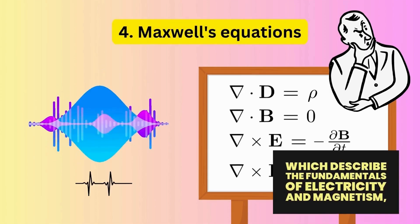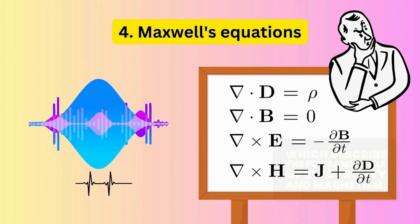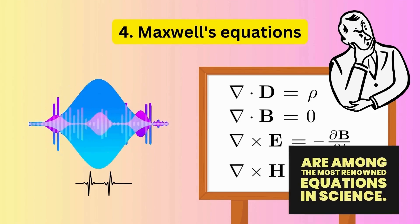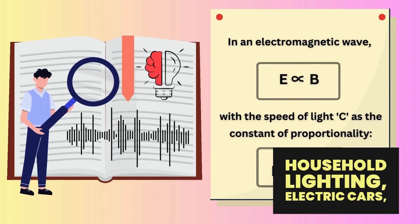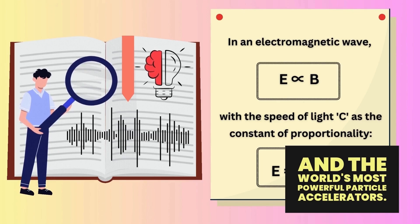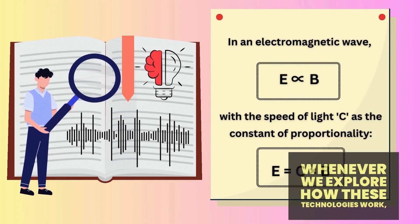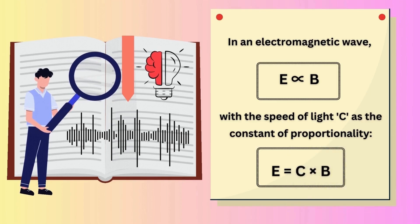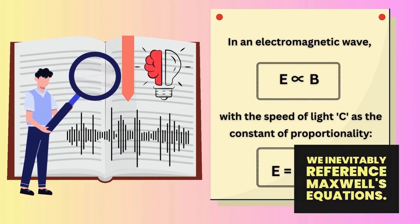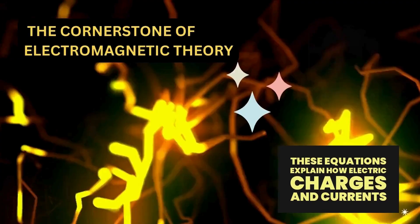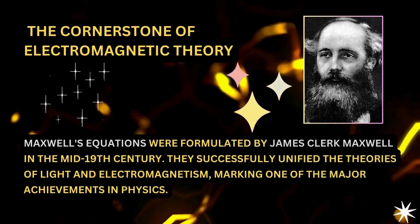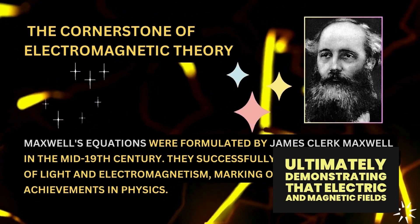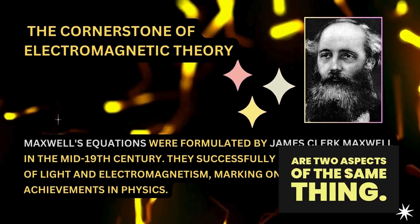Maxwell's equations, which describe the fundamentals of electricity and magnetism, are among the most renowned equations in science. They underpin the operation of technologies like cell phones, household lighting, electric cars, and the world's most powerful particle accelerators. Whenever we explore how these technologies work, we inevitably reference Maxwell's equations. These equations explain how electric charges and currents generate electric and magnetic fields, ultimately demonstrating that electric and magnetic fields are two aspects of the same thing.